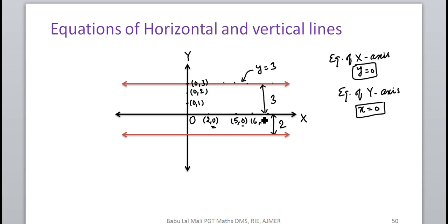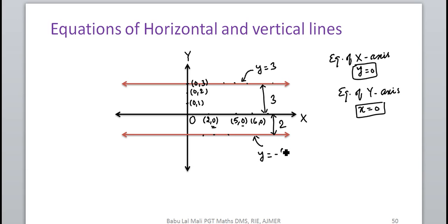If the line is downward of the x-axis — for example, if we have a point whose y-coordinate is always minus 2 — then this line's equation is y = −2.